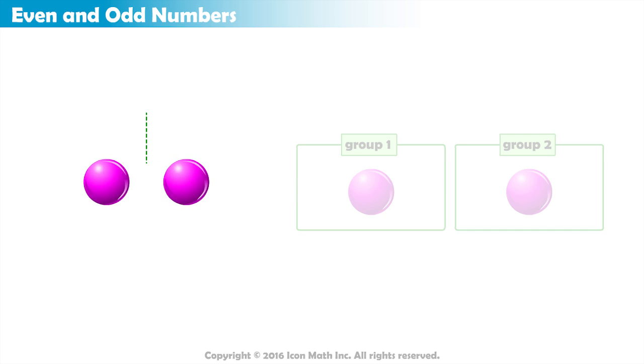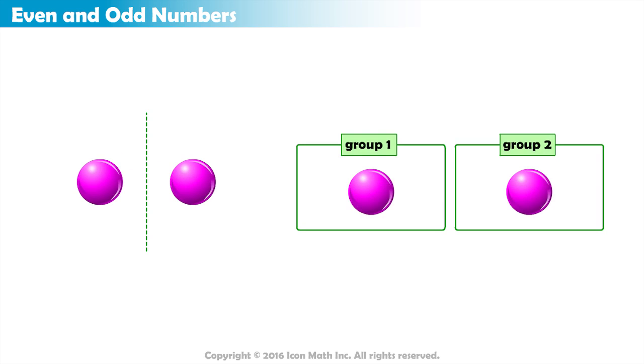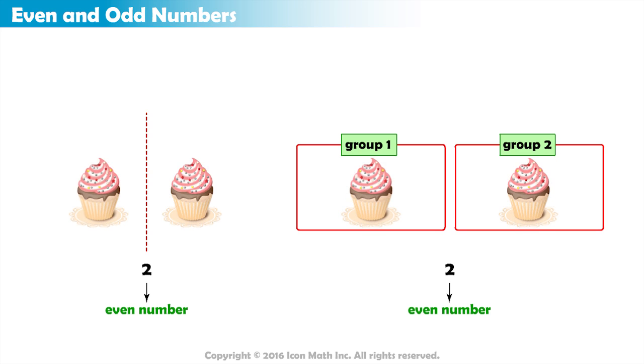Or we can say, split them in half. We call the number 2 an even number, because we can evenly divide two objects in half.